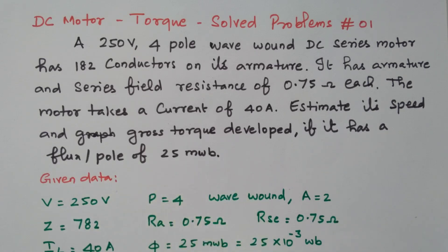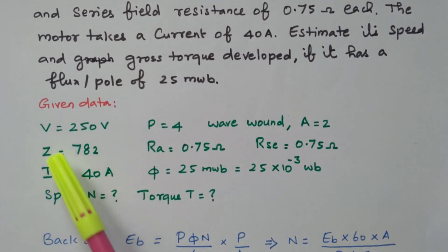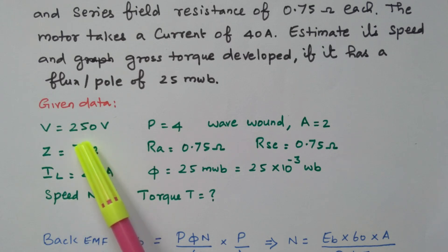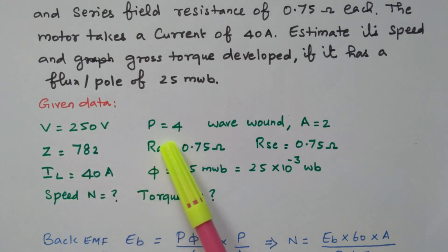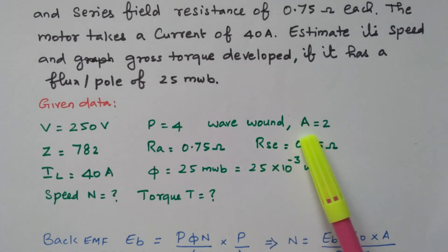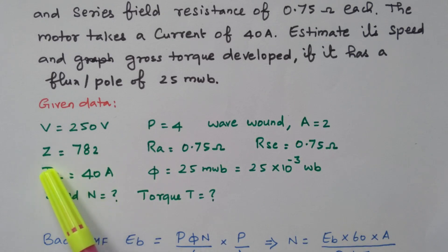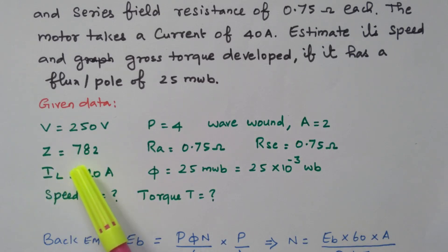Now we will see the given data. The terminal voltage is 250 V. Number of poles equals 4. The winding is wave connected — if it is wave connected, the number of parallel paths is always equal to 2. The number of conductors is 782.